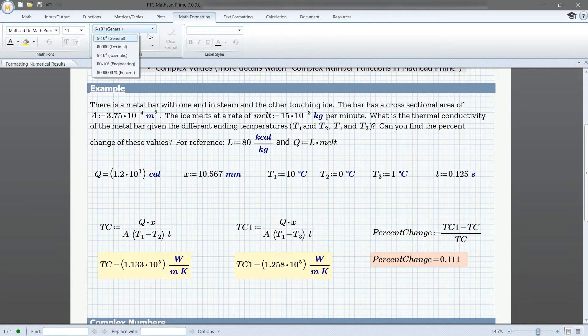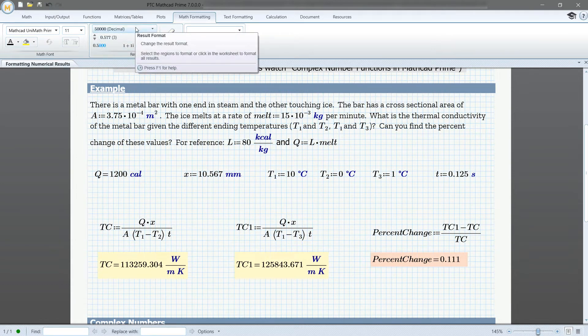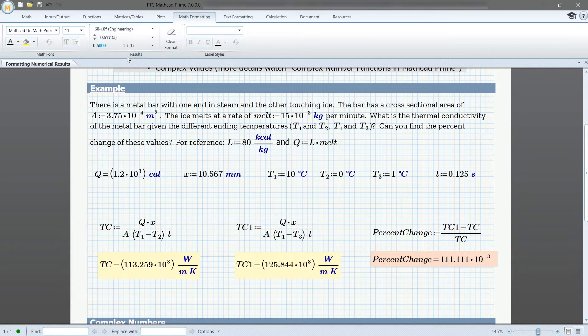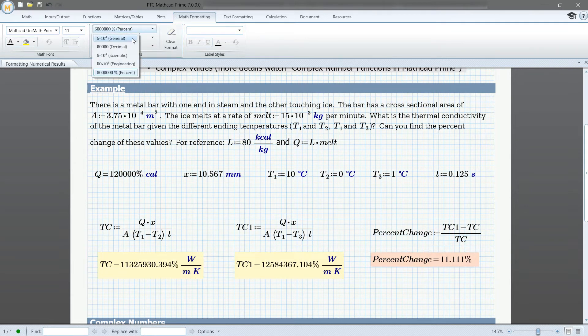Results format has five options to choose from. General, which is when results are displayed in exponential notation when the exponential threshold of 3 is exceeded. Decimal, which is when results are never in exponential notation. Scientific, which is when results are always in exponential notation. Engineering, which is when the results are always in exponential notation and the exponents are multiples of 3. As well as percent, which changes the value to a percentage.